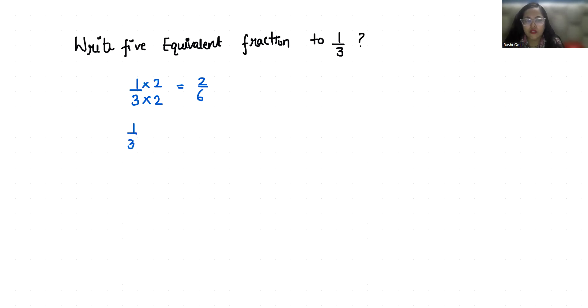Now if I multiply with 3 in numerator and denominator, so 3/9 equals 1/3.